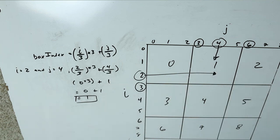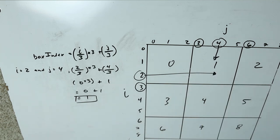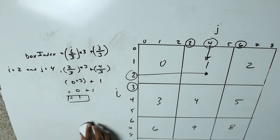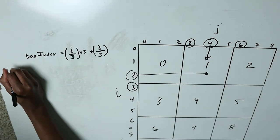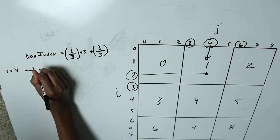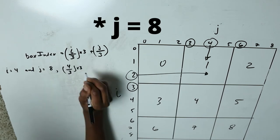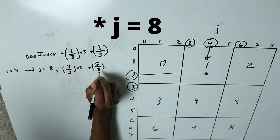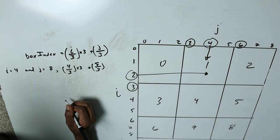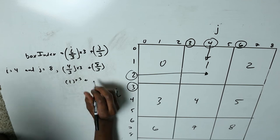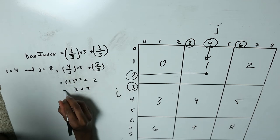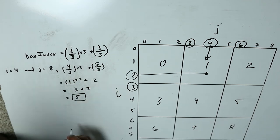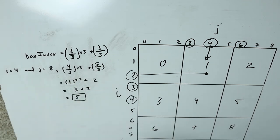For the mid row test: j equals three and i equals four. That gives us one times three plus two, which equals five. That's correct — we've got that piece.